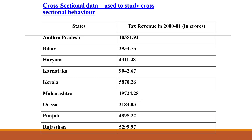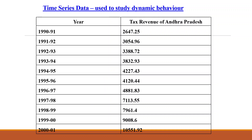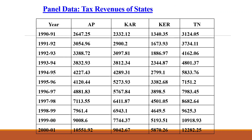Cross-section data is any data taken at one snapshot or one time interval. Here you can see the tax revenues of some states have been collected — for the years 2000 and 2001, only one year per state. Time series data uses only one state, with past data taken from 1990 to 2000. In the case of panel data, it is a combination of cross-section and time series data — in the columns we have states and in the rows we have years.